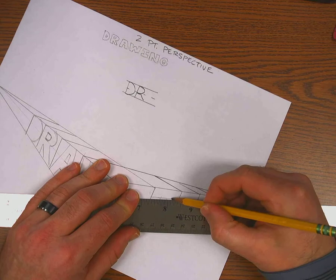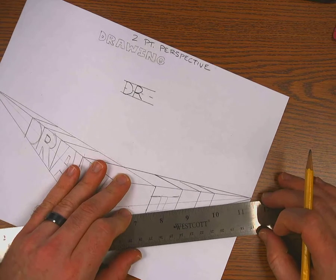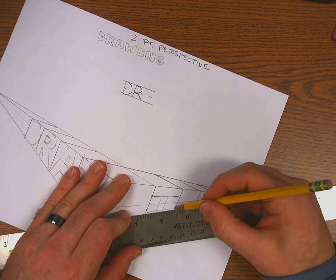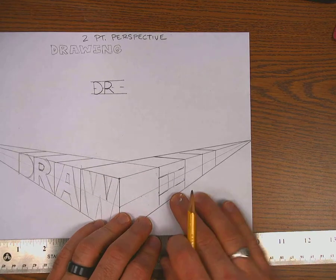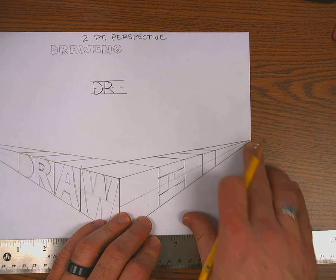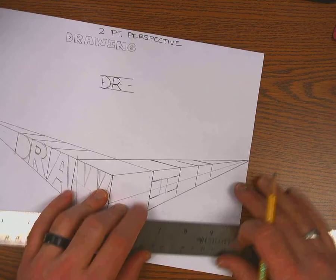Make sure those lines go to the vanishing point on the right side now. So whatever's on the front of the block, if it's on the right side of the paper, the front of the block goes to the right vanishing point. If it's on the left side, the front will go to the left.